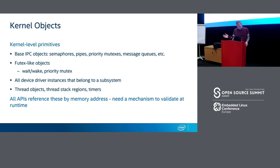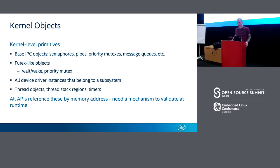Kernel objects cover our IPC objects: semaphores (ksem), kpipes, kmutexes with priority inheritance, and kmessage queues. We also have futex-like objects that handle wait and wake semantics and priority-inheriting mutexes. Any device driver instance is also a kernel object — system calls are implemented at the driver subsystem level rather than per-driver, so there's a common set of APIs for each device type. OS-level things like system timers, thread objects, and thread stacks are also counted as kernel objects.